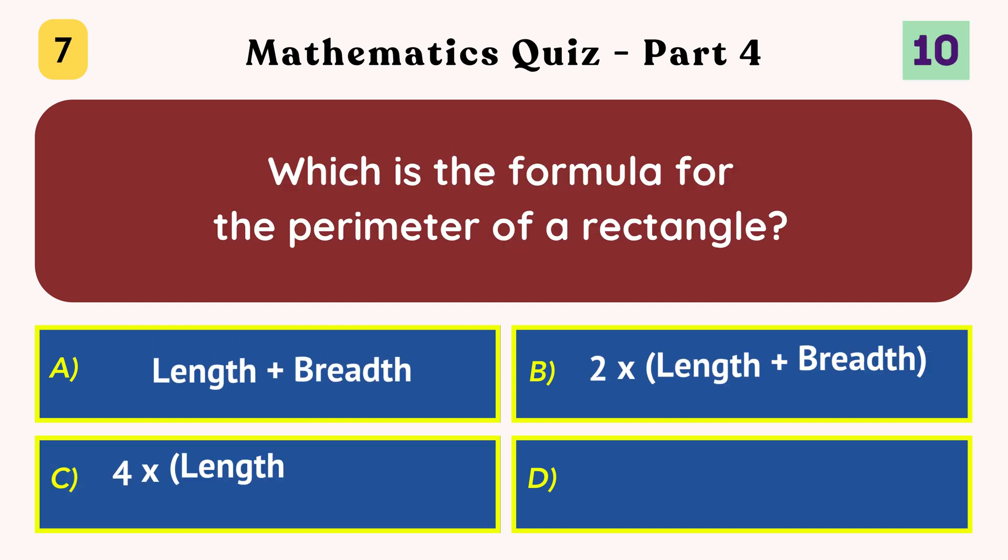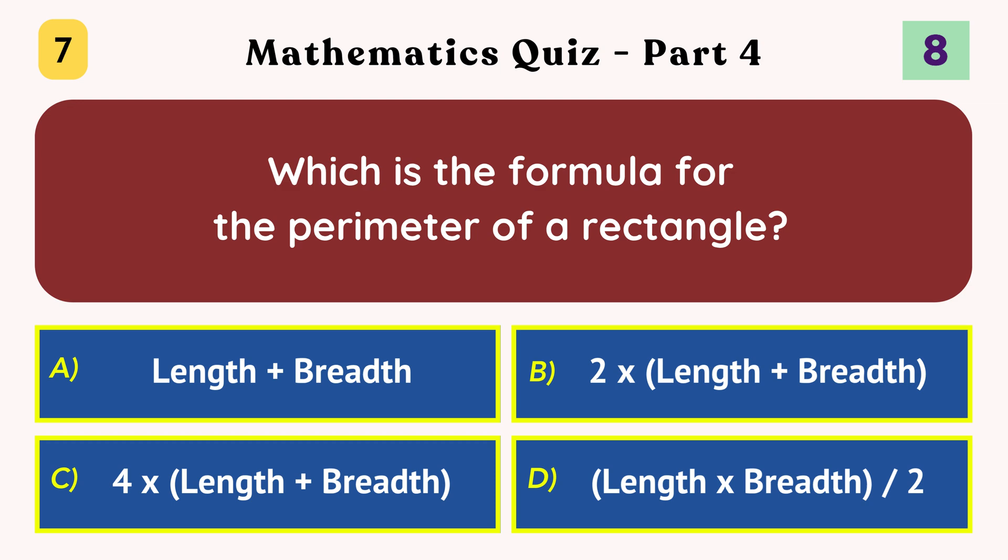Which is the formula for the perimeter of a rectangle? 2 times length plus breadth.